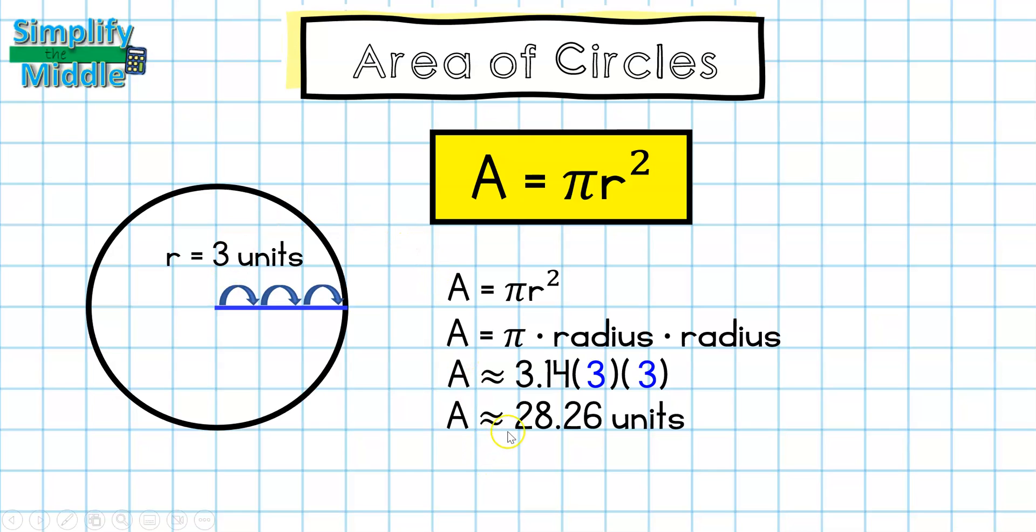So area is approximately 28.26 units squared. In my circumference problems I was talking about one dimension, but in this I'm talking about two dimensions because I'm talking about the area inside, so I have to write my units squared.